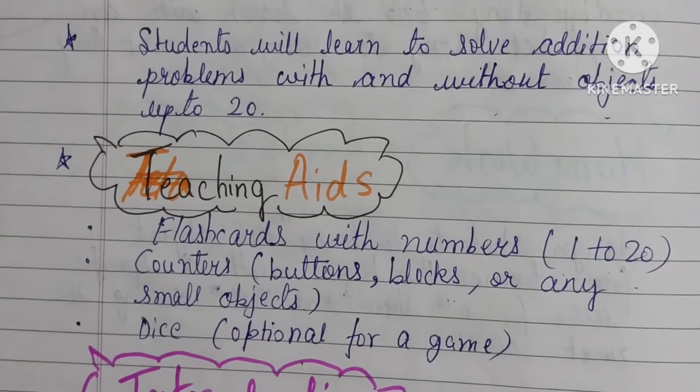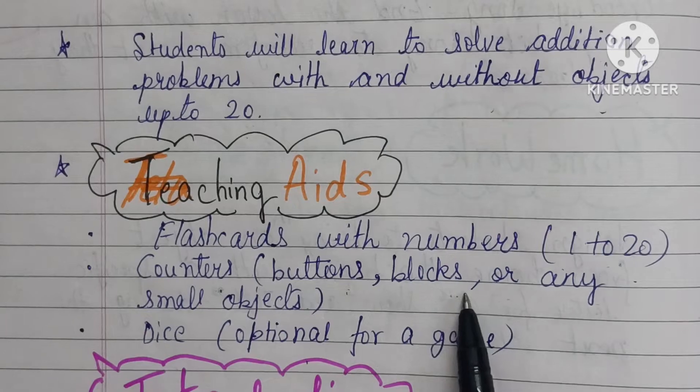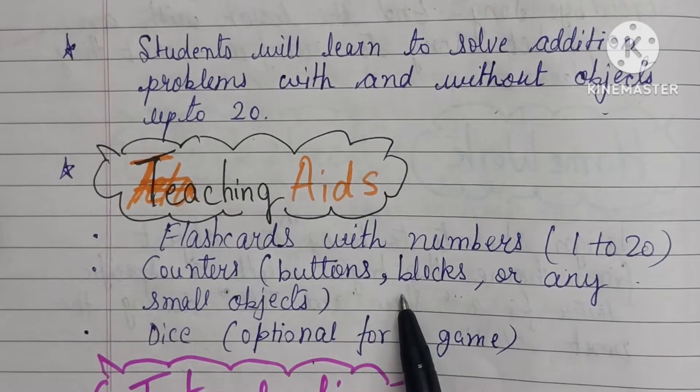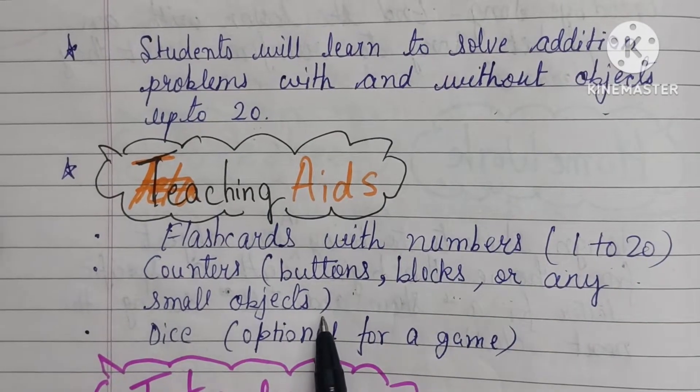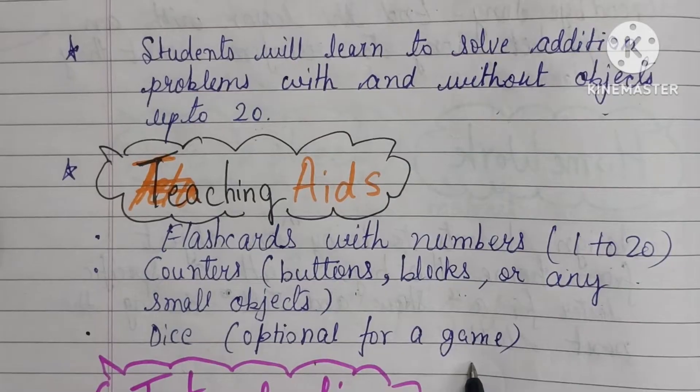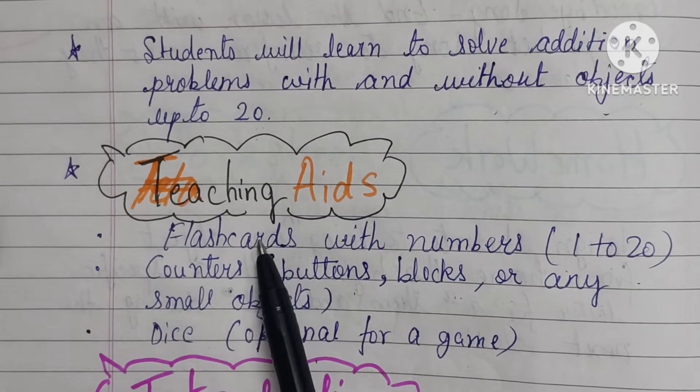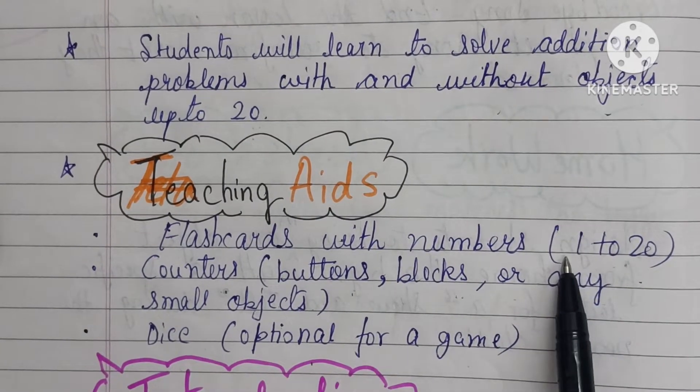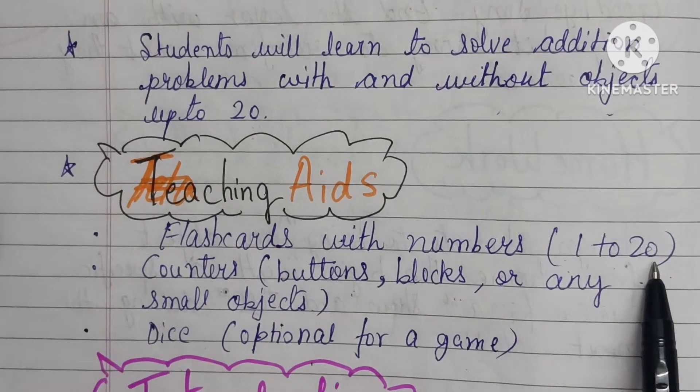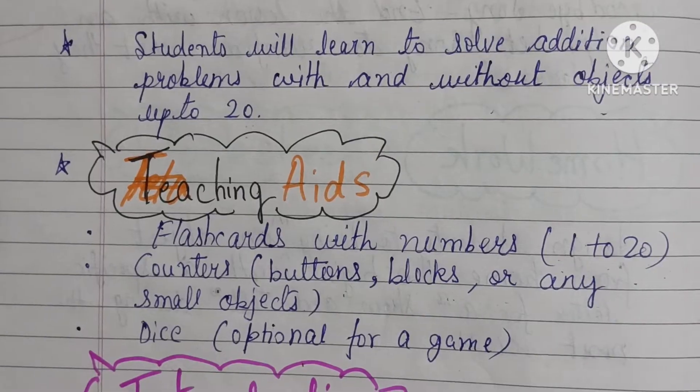Teaching aids: Flashcards with numbers 1 to 20, counters like buttons, blocks or any small object, dice - this is optional for a game. So you can take flashcards because this is the lesson plan for 1 to 20. If you want to teach further, you can take any other numbers.